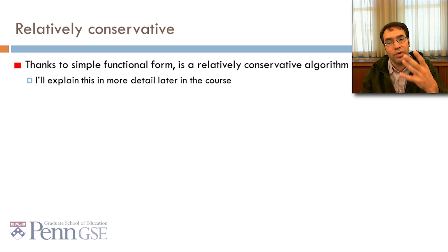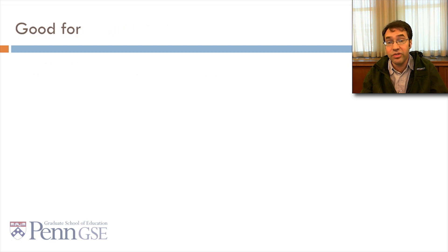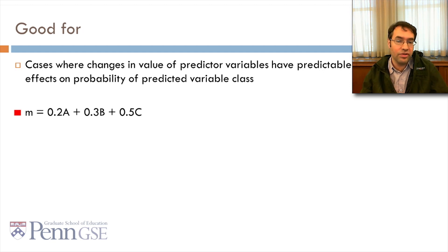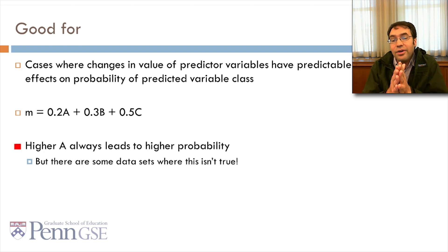Logistic regression is relatively conservative, thanks to its simple functional form. I'll explain this in more detail later in the course. It's good for cases where changes in the value of the predictor variable have a very predictable effect on the probability of the predicted variable. For example, in this case, 0.2a plus 0.3b plus 0.5c, higher a always leads to higher probability. But there are some data sets where this is not always true, where things aren't so neatly linear, or logistic.